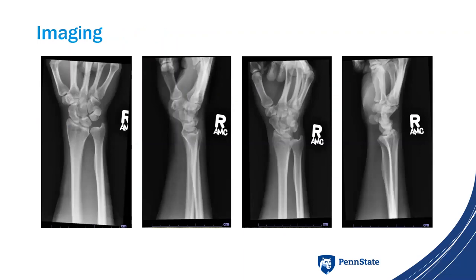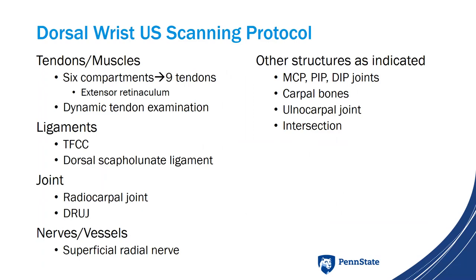I first looked at previous imaging. These images are from a few years prior, back in 2018 — just to get a lay of the land. I think it's helpful to review whatever images you have. The x-ray from 2018 was pretty unremarkable for anything that would explain her current symptoms.